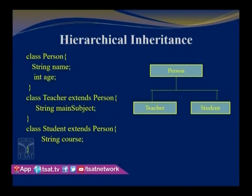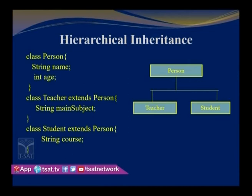In hierarchical inheritance, teacher and student are both subclasses of person. Teacher is a person and student is also a person. When defining the teacher class, it extends person and adds main subject as its own member. The student class also extends person and defines its own field, course. When a class has more than one subclass, it is hierarchical — this is an example of hierarchical inheritance.